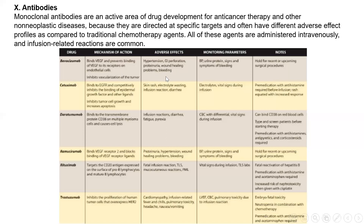The major side effects related to bevacizumab include hypertension, gastrointestinal perforation, proteinuria, problems with wound healing, and bleeding. Cetuximab targets a different receptor — the epidermal growth factor receptor (EGFR). It binds to these receptors and prevents epidermal growth factor from binding, causing inhibition of tumor growth.